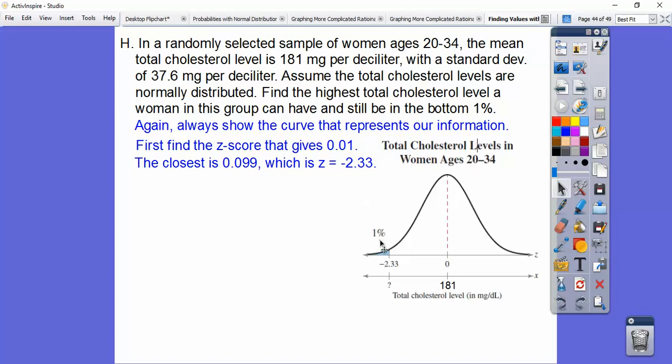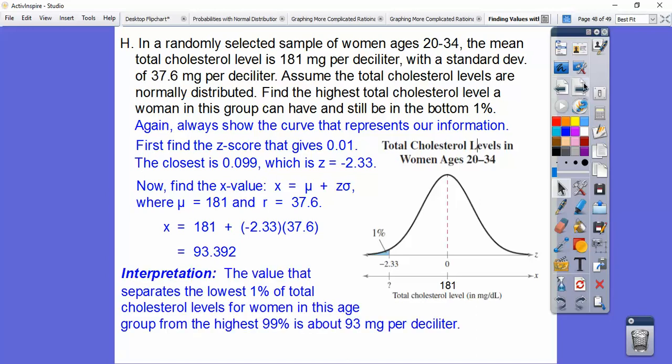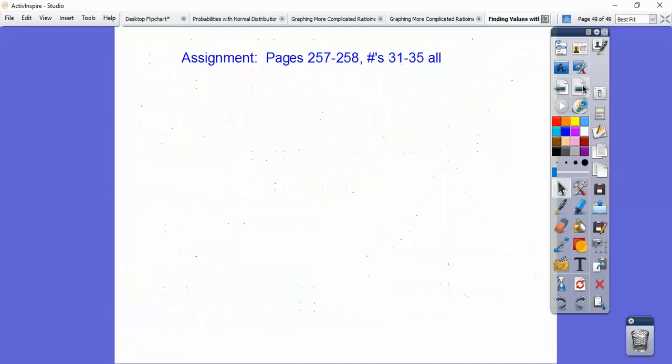So now we just plug it into the formula with those numbers right there, and so when we do that, we get that. What does that mean? That the value separates the lowest 1% of the total cholesterol levels from the women in this age group to the highest is about 93 milligrams per deciliter. All right, if you're in our class, we're going to assign you that. Take care.